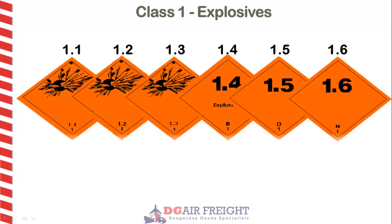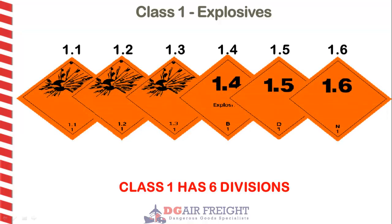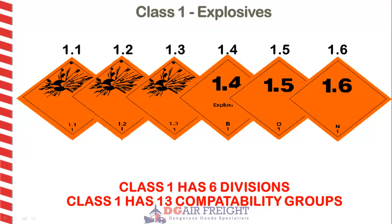Explosives are categorised into one of six hazard divisions, determined by the speed at which they expand and their sensitivity to initiation by heat or pressure. And for handling and stowage purposes, explosives are also assigned to one of 13 compatibility groups, depending on the nature of their danger.